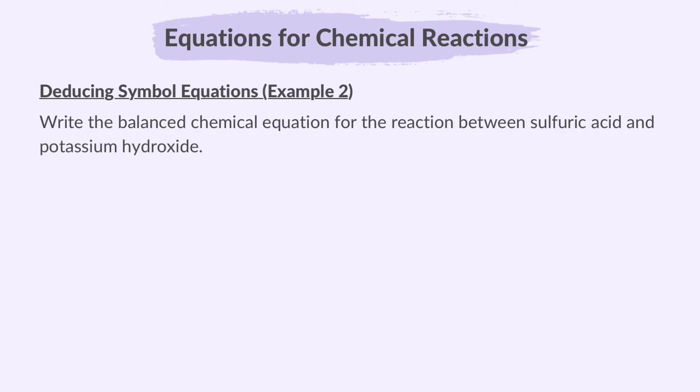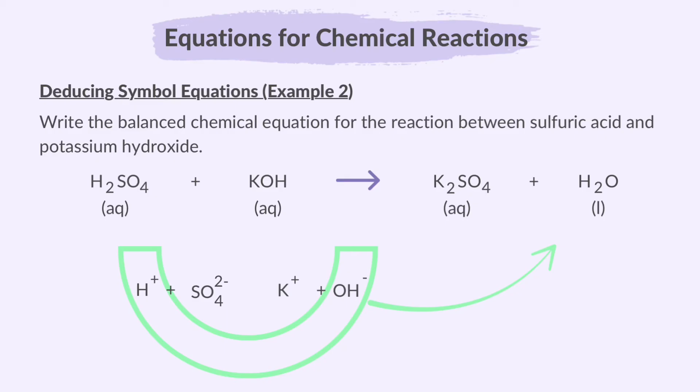Example 2, write the balanced chemical equation for the reaction between sulfuric acid and potassium hydroxide. Sulfuric acid dissociates into H plus and SO4 2 minus ions. And potassium hydroxide dissociates into K plus and OH minus ions. The H plus ions from sulfuric acid react with the OH minus ions from potassium hydroxide to form water. The remaining ions, K plus and SO4 2 minus, combine to form potassium sulfate or K2SO4.